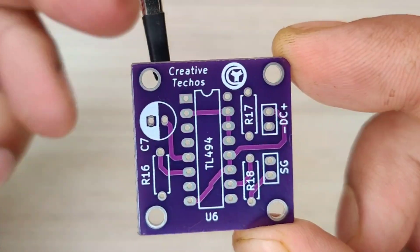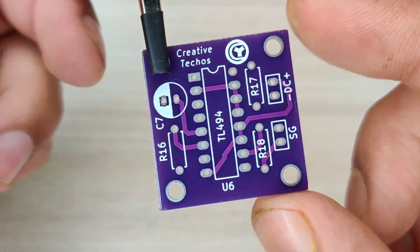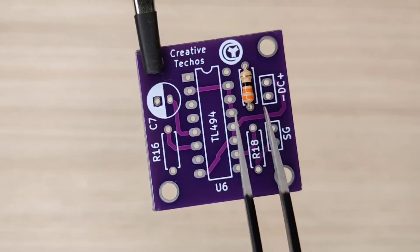And now it is time to assemble the PCB. So let's place all the components on the PCB according to the circuit diagram.